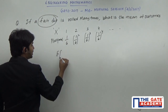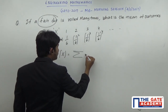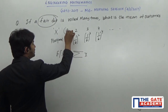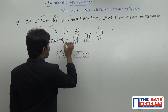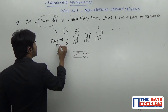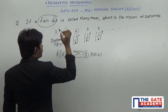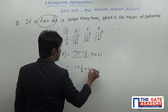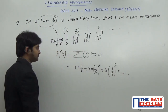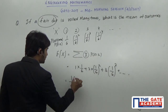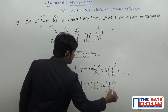Now, mean is nothing but the expectation, and we know the formula for expectation. Expectation is nothing but sigma of x times P(X = x). When x = 1, the term is 1; x = 2, it is 2; x = 3, it is 3; x = 4, it is 4, and so on. So taking all events: 1 × (1/6) + 2 × (1/6)² + 3 × (1/6)³ + so on. Taking 1/6 as common: (1/6) × [1 + 2×(1/6) + 3×(1/6)² + ...].